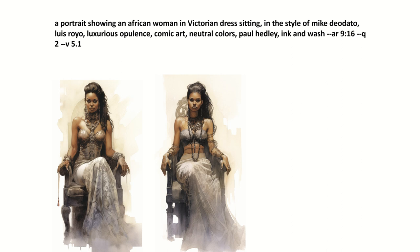Then we have a portrait showing an African American in Victorian dress sitting, in the style of Mike Deodato and Louis Royo. We added some additional keywords, using an aspect ratio of 9 by 16, quality 2. Your quality goes up to 5 — that's the max you can get in quality. And then we have the versioning.